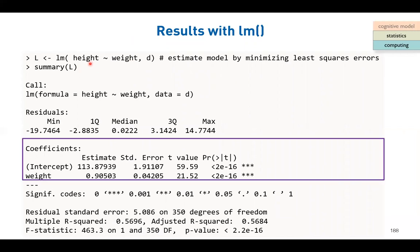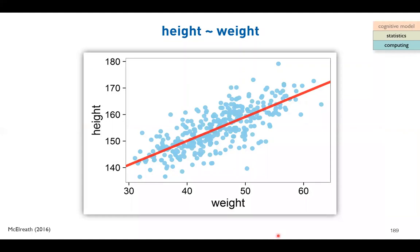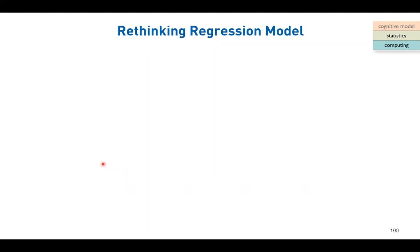We could run a simple linear model in R using weight to predict height - simple linear regression. We observe a positive relationship between the two variables described by a regression line shown in red. The x-axis is weight, the y-axis is height. How could we do this using the Bayesian approach - Bayesian regression? We need to think about what the likelihood function is.